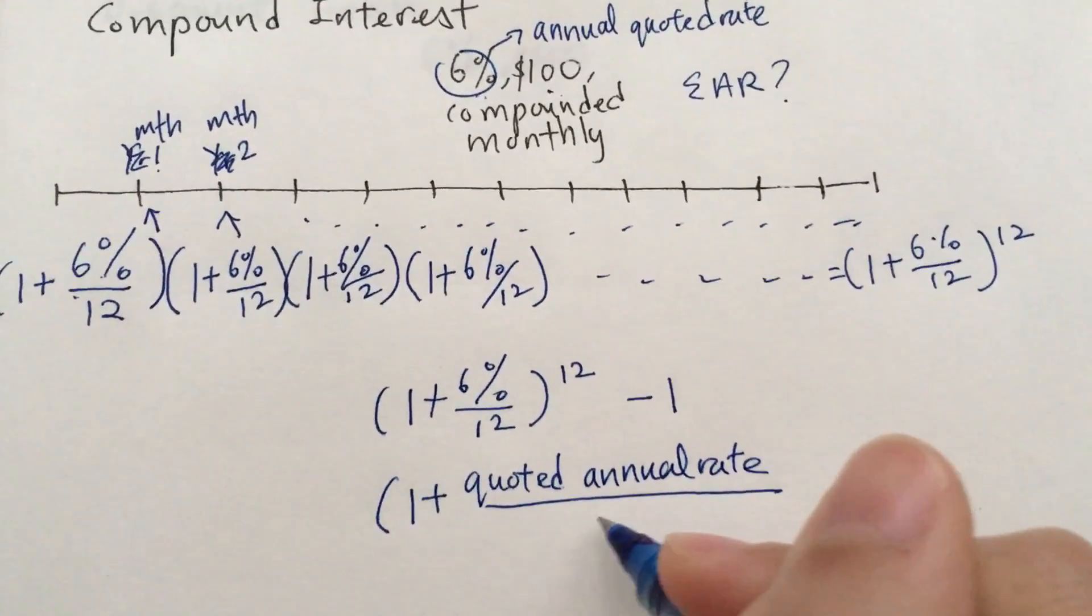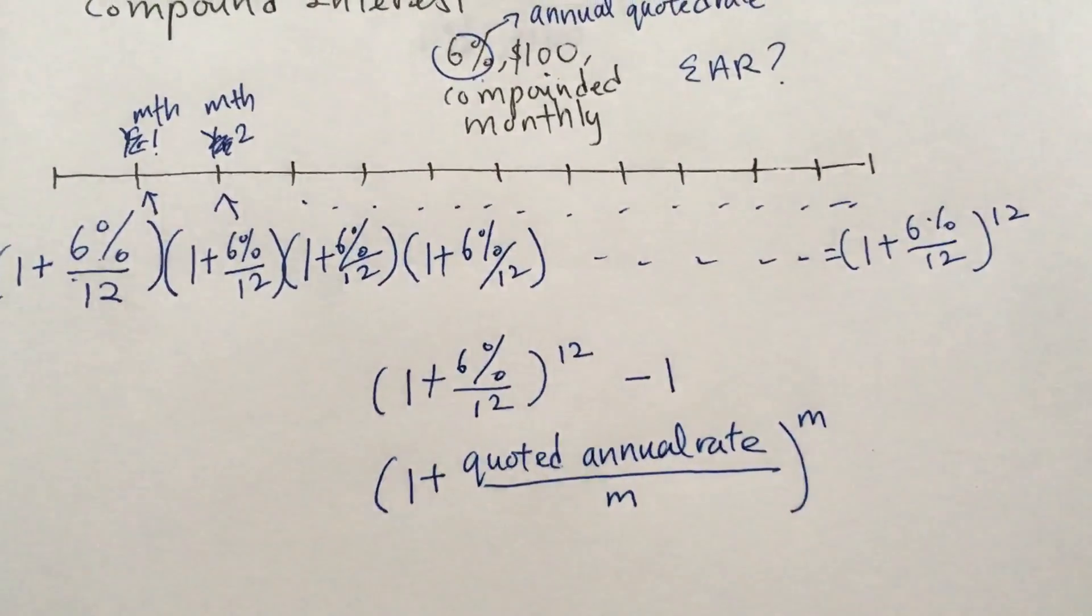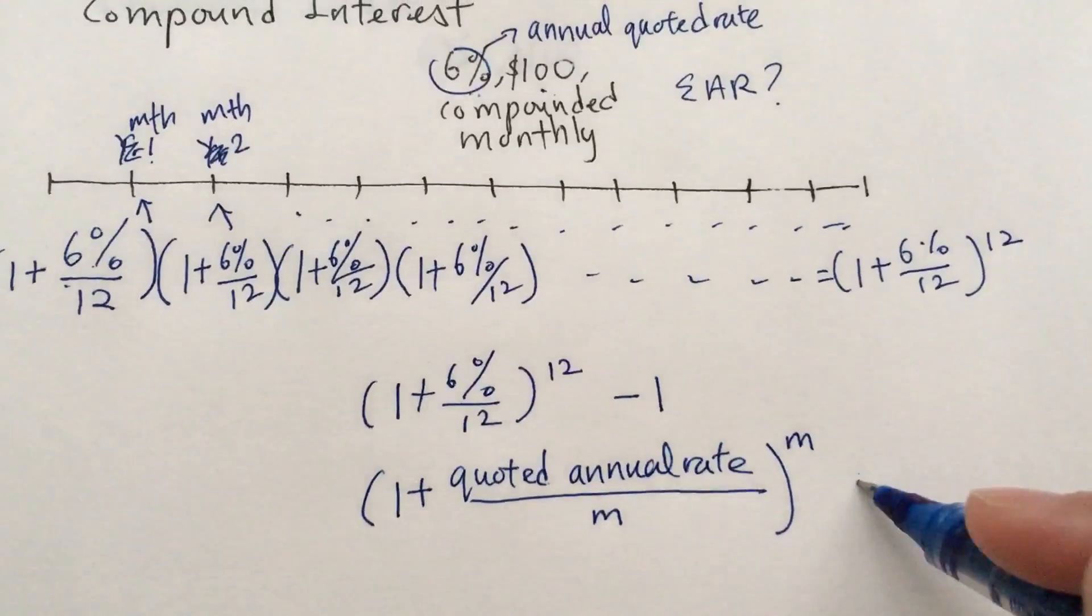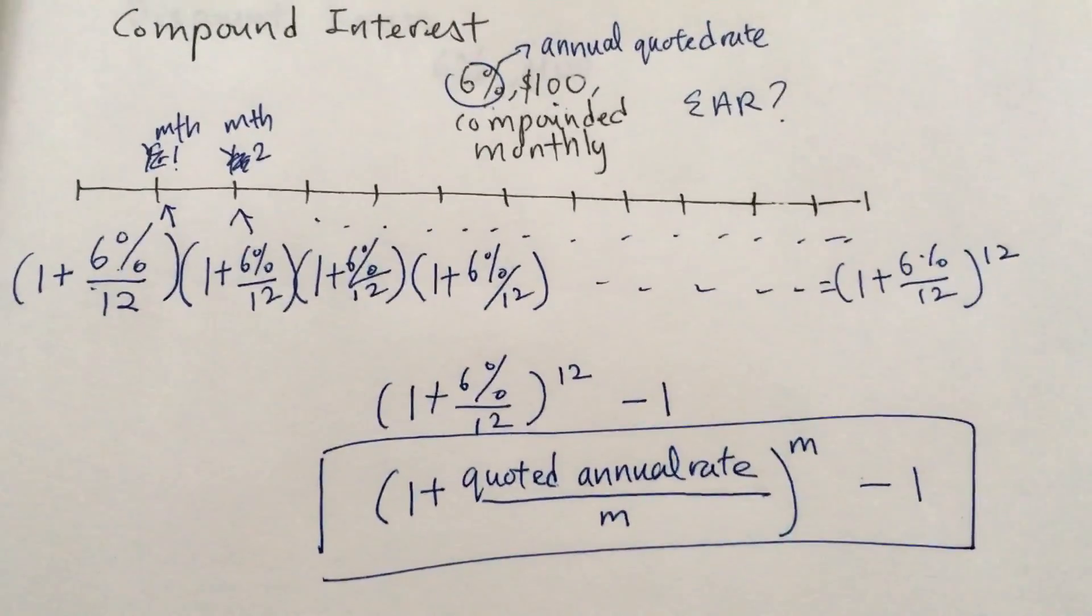divided by the number of periods in a year to the power of the number of periods in the year, minus 1. That's how the formula is derived.